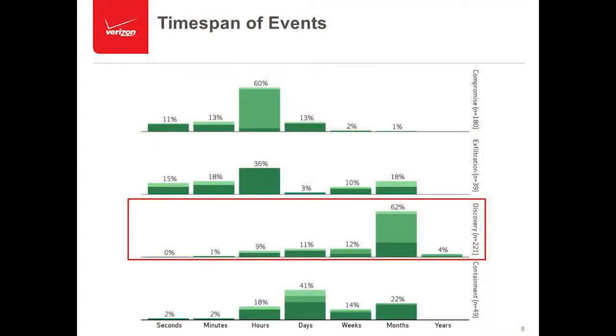Looking at containment: naturally once we discover it, we're getting on top of it and containing it quickly because we know how it happened — we rolled back all the authentication logs, we know who logged in, whose accounts were impacted, which systems and data were touched. But when you see 14% weeks or 22% months for containment, the data's already been walking out the door for months. That goes back to most organizations: even if they have a reasonably good IAM solution, they don't know what to look for or how to correlate the data to understand what's happening and when.